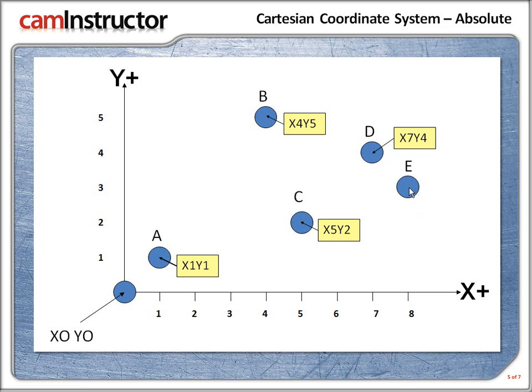And let's check out position E. So the X value would be 8 and the Y value would be 3. So position E, X8 Y3.